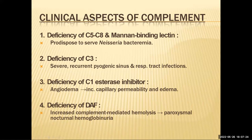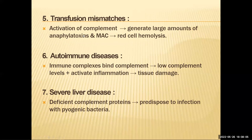In terms of clinical aspects: deficiency of C3 causes recurrent pyogenic sinus and respiratory tract infections. Deficiency of C5 through C8 and mannose-binding lectin predisposes to serious bacterial infections. Deficiency of C1 inhibitor leads to angioedema. Deficiency of DAF causes increased complement-mediated hemolysis.